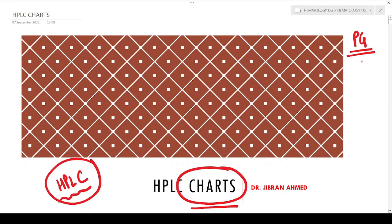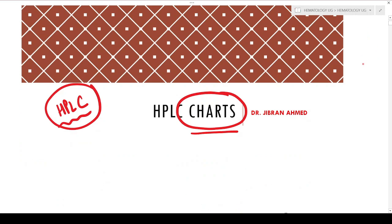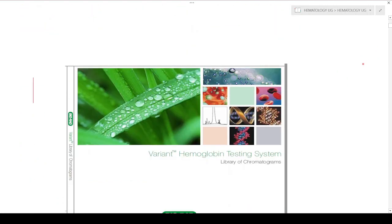For postgraduate residents of pathology especially, this is very important because such charts are brought by the examiner and will be asked in your practical exam. You should be well versed with these charts. Once you pass out and start practicing, you may also have to interpret these charts and leave reports.